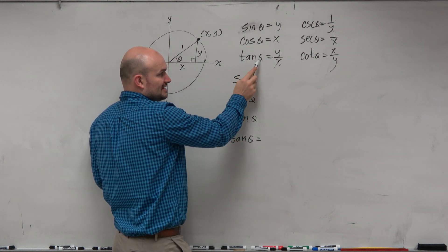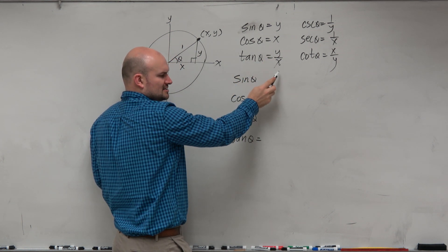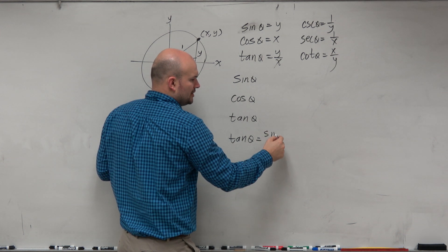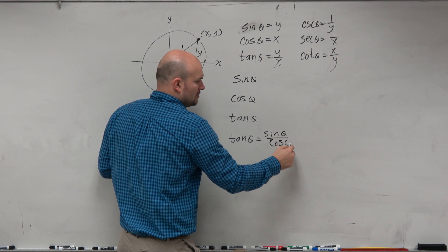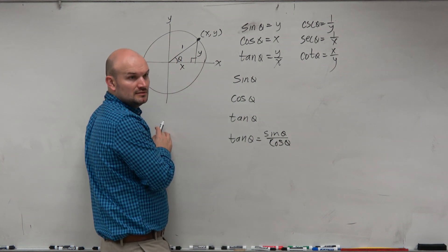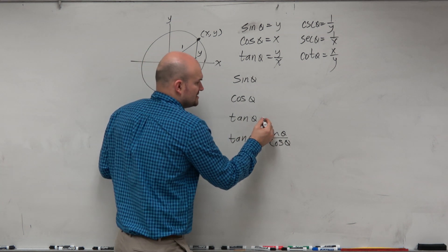So if you look at tangent, tangent of theta is y over x. Then does it make sense in our understanding to just rewrite that as sine of theta over cosine of theta? All right. Makes some kind of sense, right?